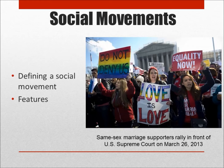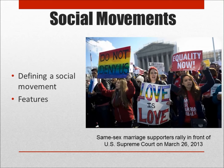Advocates of a given social movement generally seek to change just a limited number of aspects of society, but they generally do not seek to drastically overhaul or replace entire social, political, or economic systems. For example, the women's rights movement that began to gain traction in the 1960s and 1970s did not seek the overthrow of the capitalist system or to replace an entire government apparatus, but rather sought more limited goals like equal pay and equal rights for women.